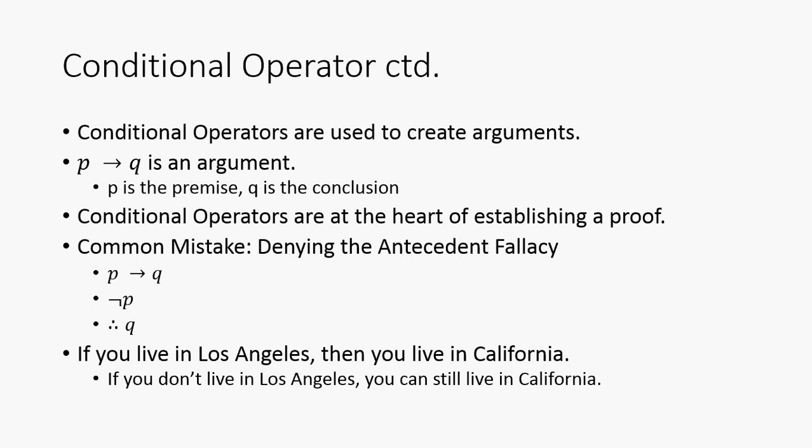So, a common mistake with these is going to be denying the antecedent. You're trying to prove something. And, you're trying to prove like P implies Q. So, you do not P. So, you figure that out. And, then you conclude. This should be a not right here. You conclude not Q.